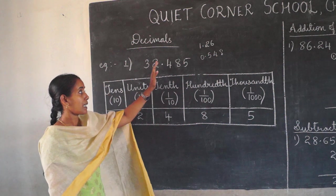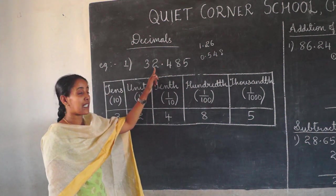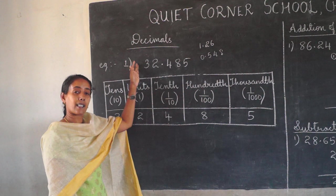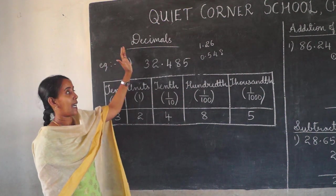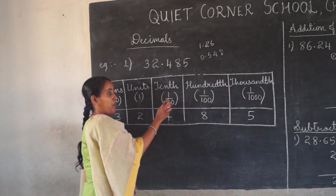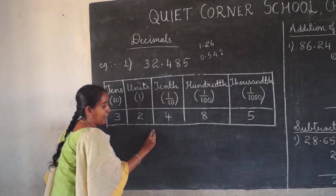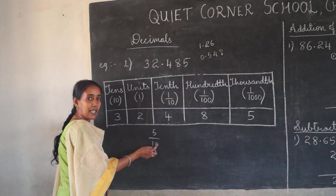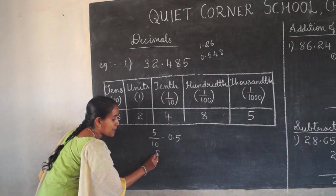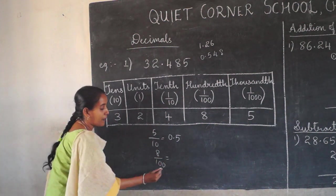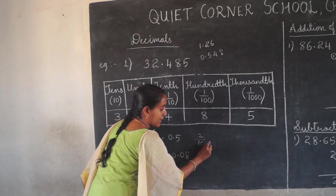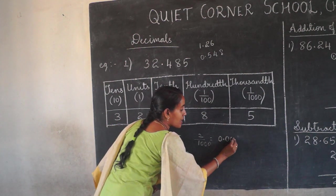So what are the places? Before the decimal point, the number which comes first is the units place. The next number is the tens place, then hundreds, thousands, ten-thousands, and so on. But after the decimal point, the first digit is the tenths place — that is 1 by 10. For example, 5 divided by 10 can be written in decimal form as 0.5. Then 8 by 100 can be written as 0.08. And 2 by 1000 can be written as 0.002.